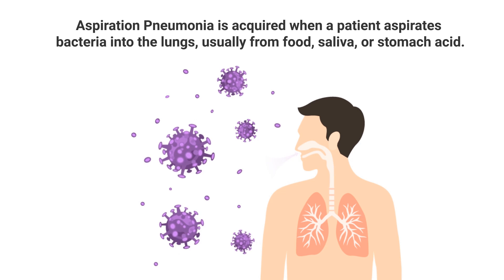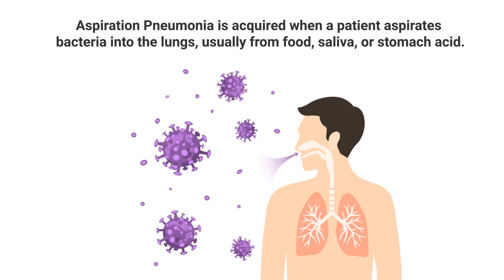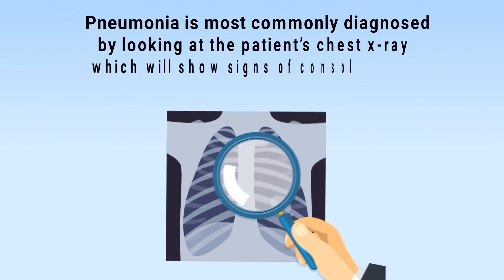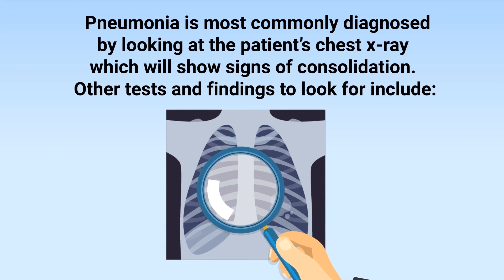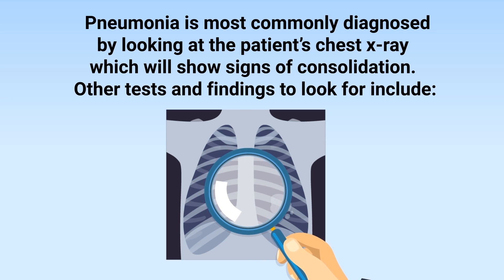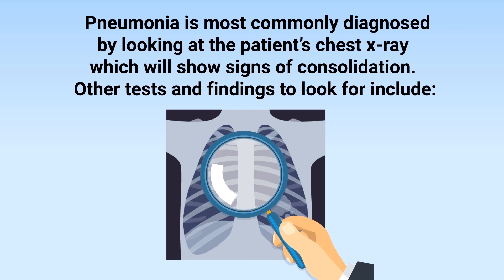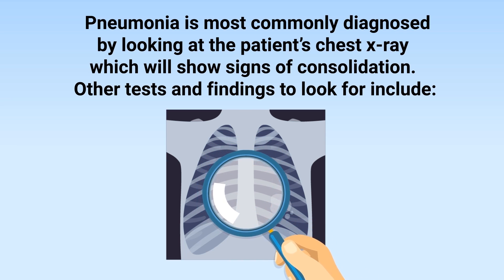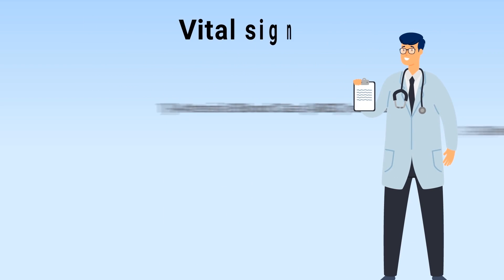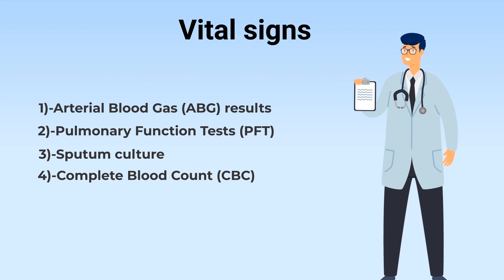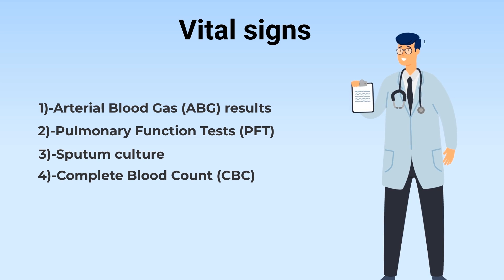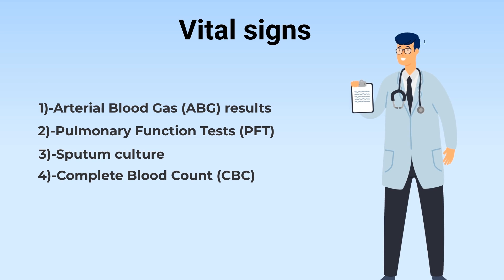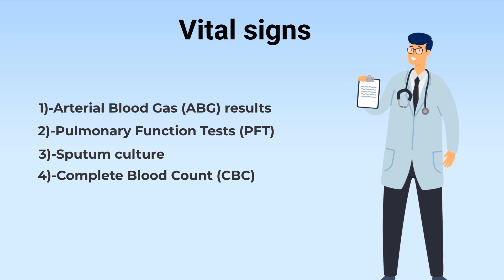Now let's talk about the diagnosis. Pneumonia is most commonly diagnosed by looking at the patient's chest x-ray, which will show signs of consolidation. Other tests and findings to look for include their vital signs, ABG results, PFT results, sputum culture, and the complete blood count.